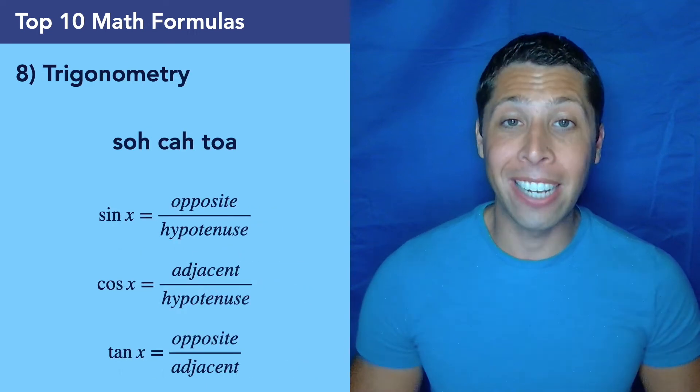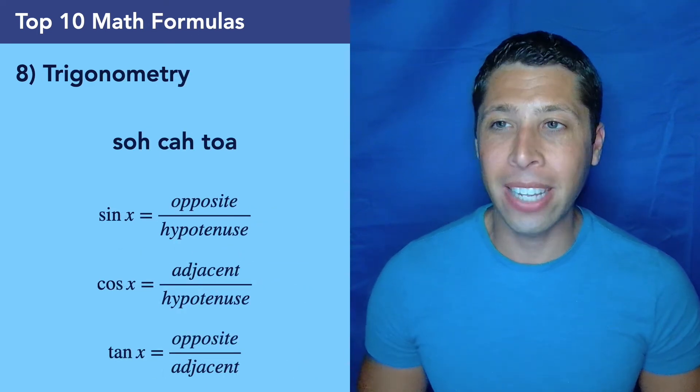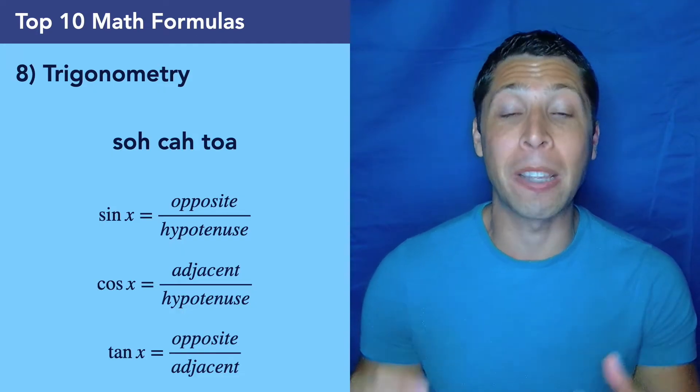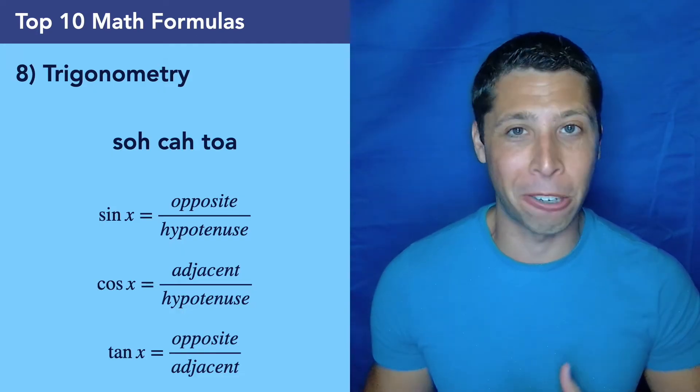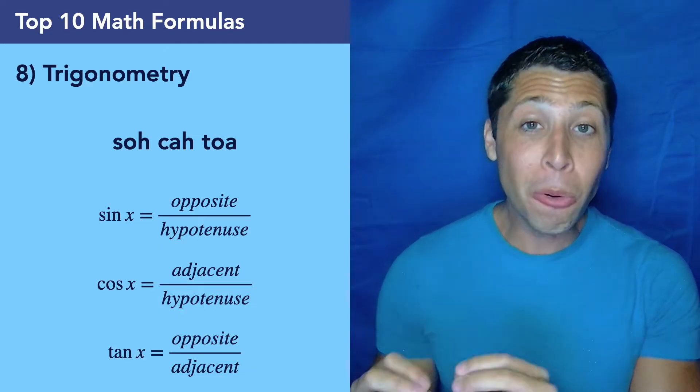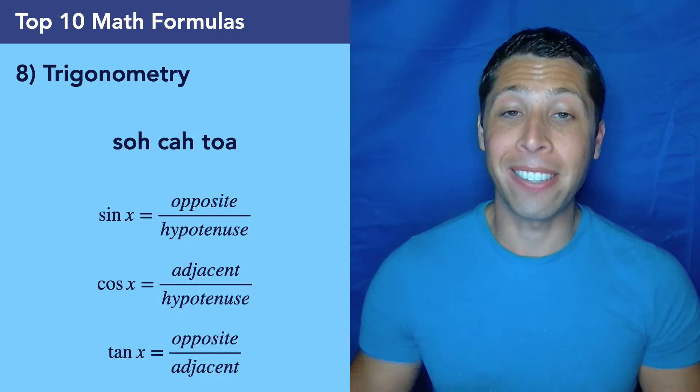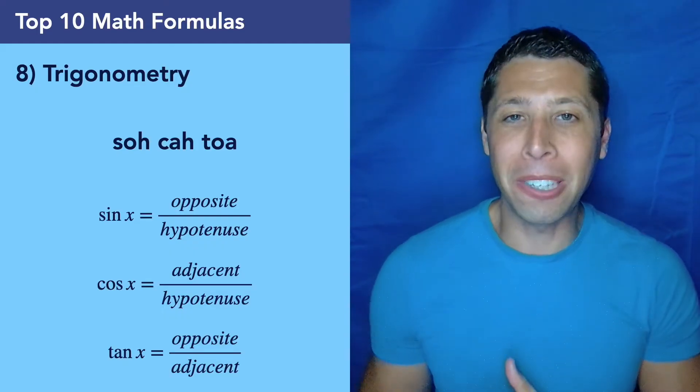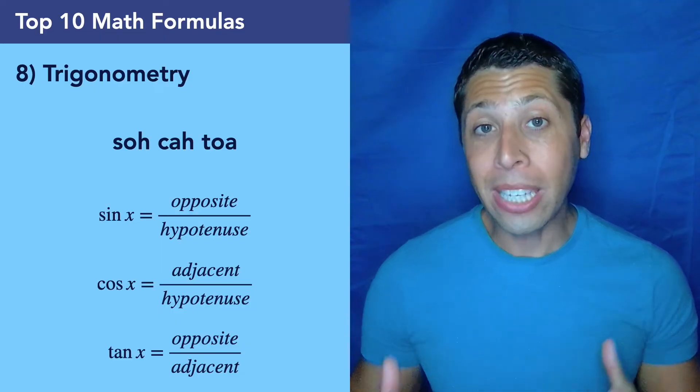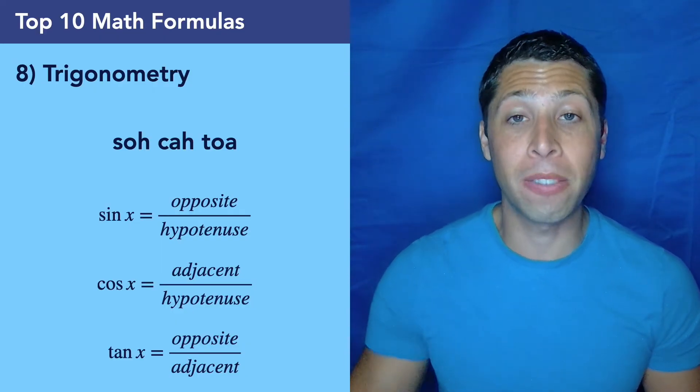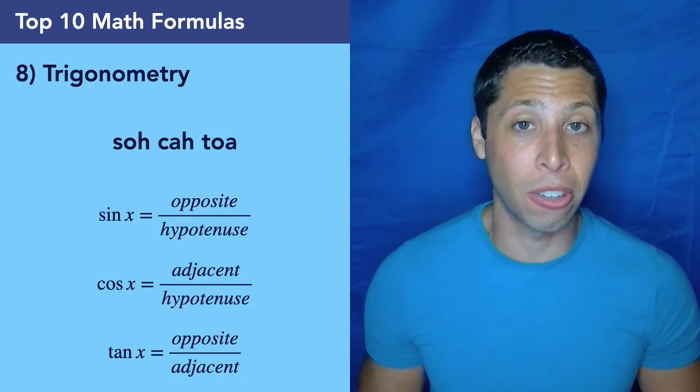Let's talk about number eight, the only geometry formula on this list. And that is because most geometry formulas are given to us in the reference chart at the beginning of both math sections. So you don't need to memorize area of a circle. You don't need to memorize volume of a cylinder. It's given to you. But SOHCAHTOA is a mnemonic device that helps us remember the trigonometry ratios. So it's kind of three formulas in one, but it's the only thing you really need to memorize that is very likely to come up on the test. And just here are all the versions. That's just a way to remind you what the fractions look like.